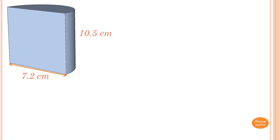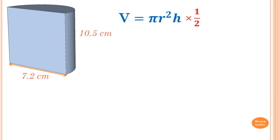To find the volume of this half cylinder, we know that the volume of a cylinder is pi r squared h. But because it is half of a cylinder, what we need to do is multiply by a half, or divide by 2.